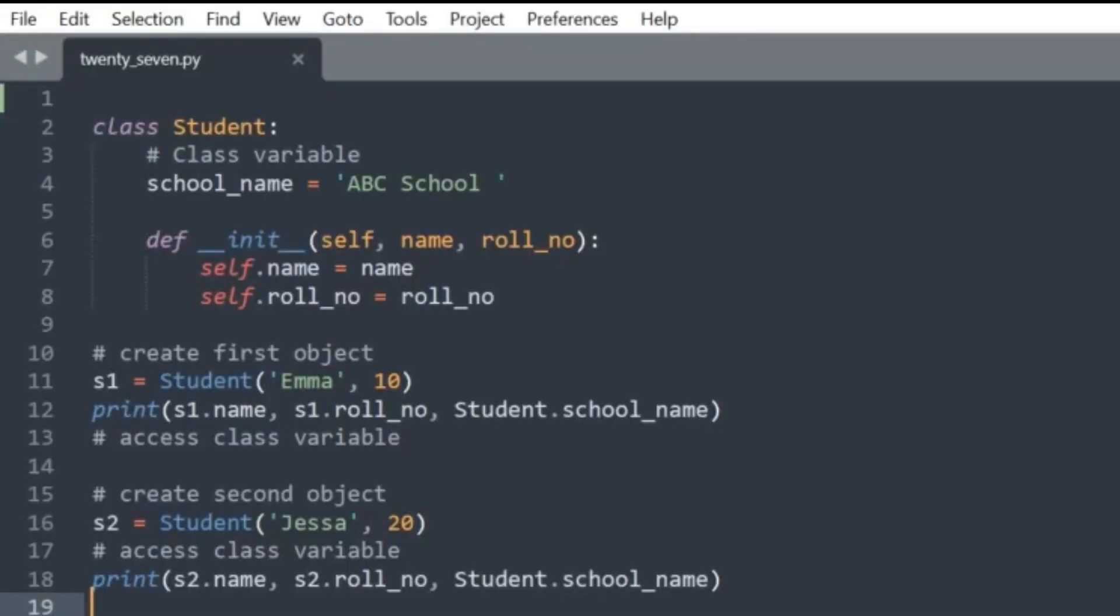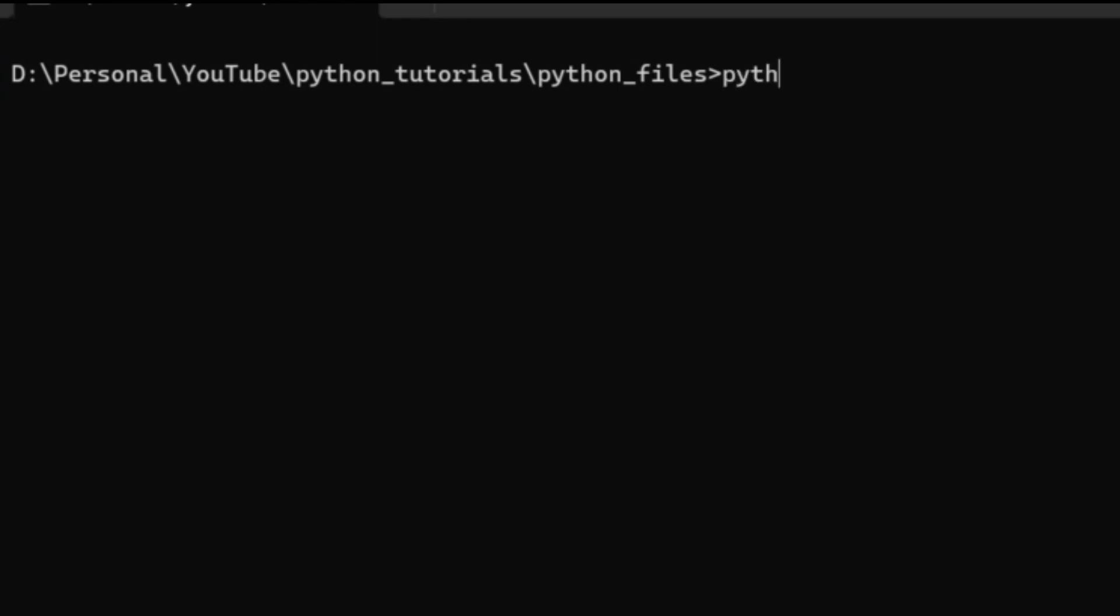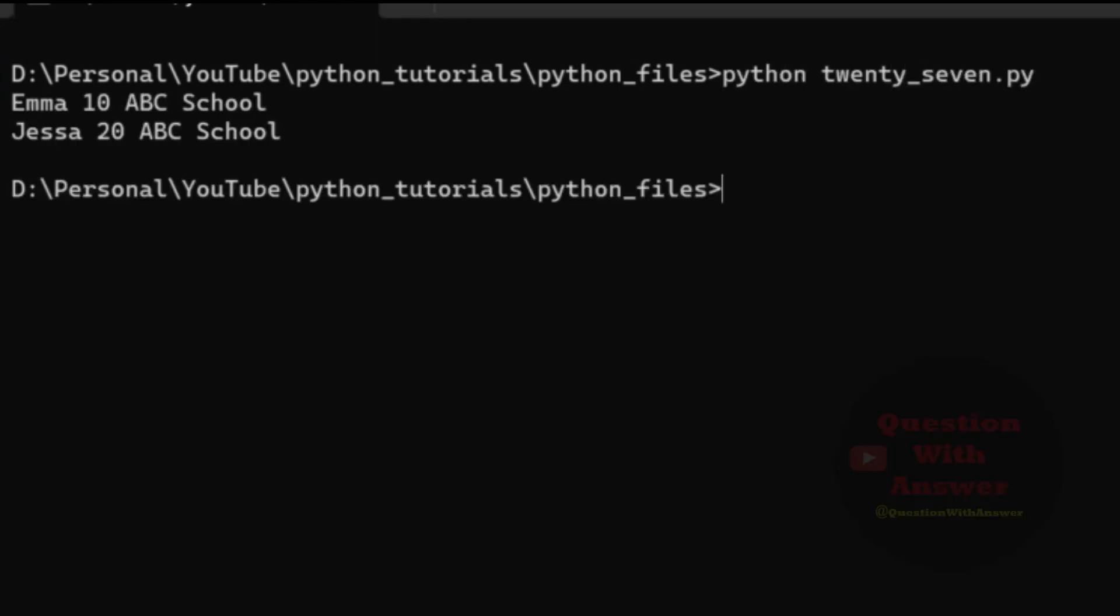In this example, we created the class variable school_name and accessed it using the object and class name. Like regular variables, class variables can store data of any type. We can use Python list, tuple, and dictionary as a class variable.